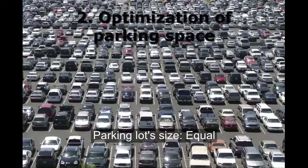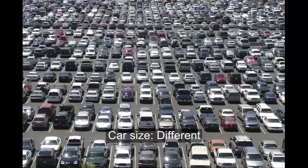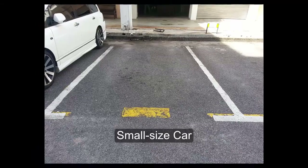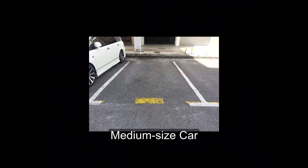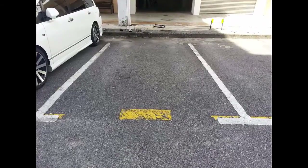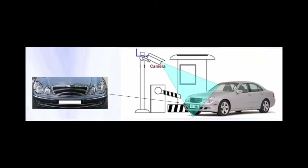The common parking lots are designed equally in size, but the cars we have are of different sizes. Actually, parking lots can be designed in such a way that the sizes are different — such as small, medium, and big — to suit different car sizes. In this way, the space can be optimized with the help of a smart parking system telling you which spot to park your car at the parking entrance.